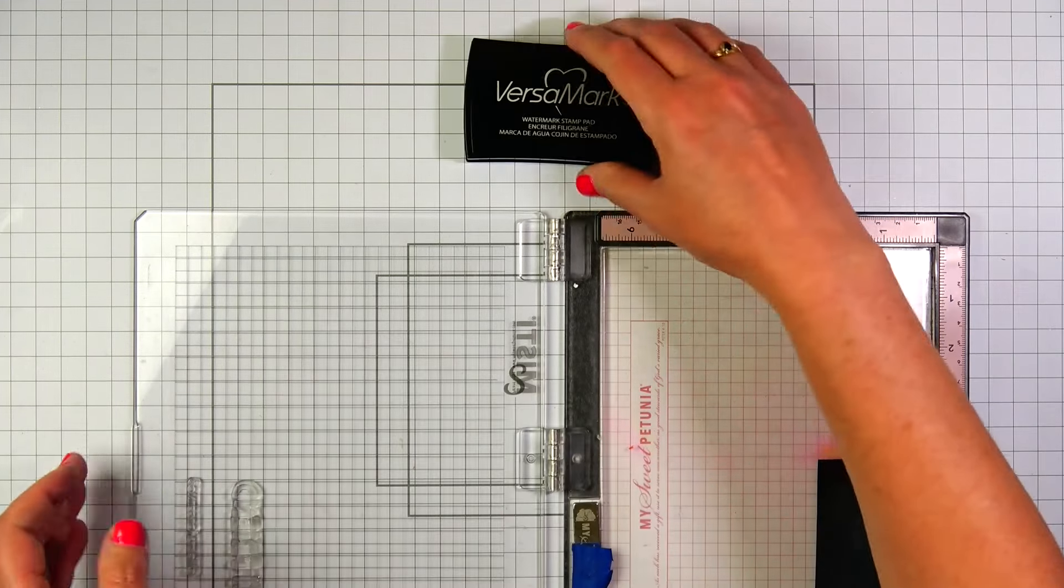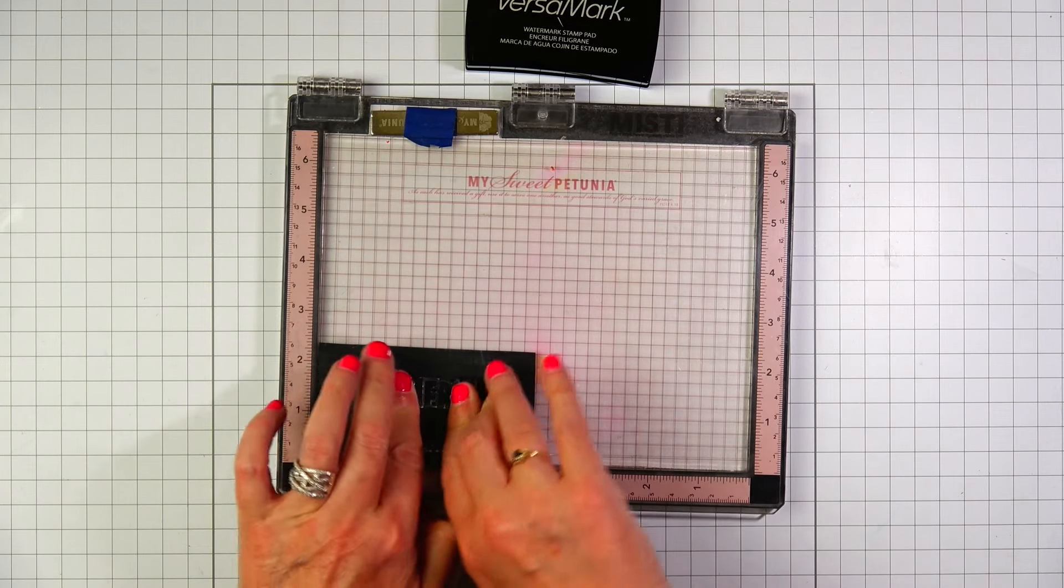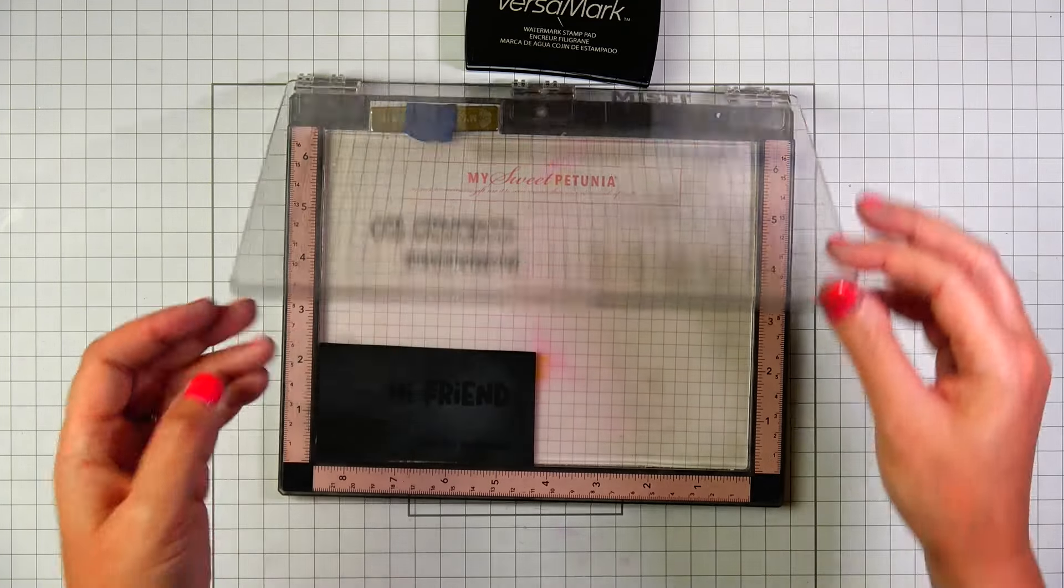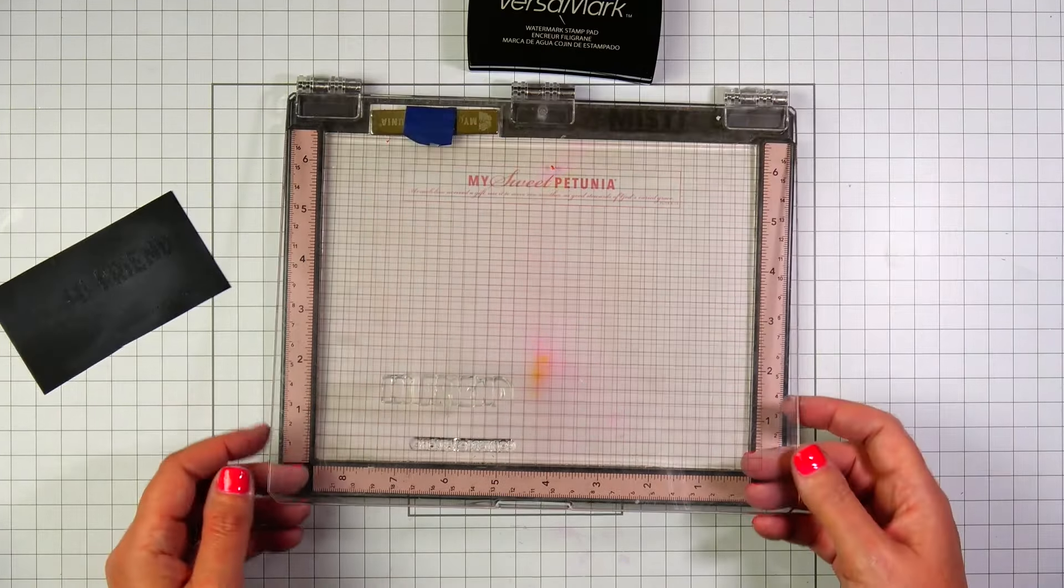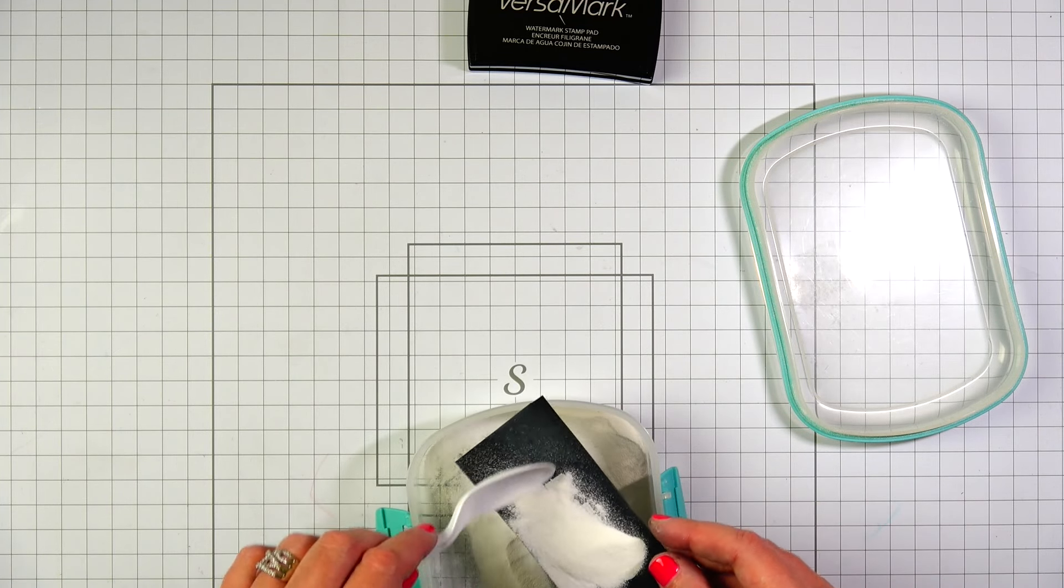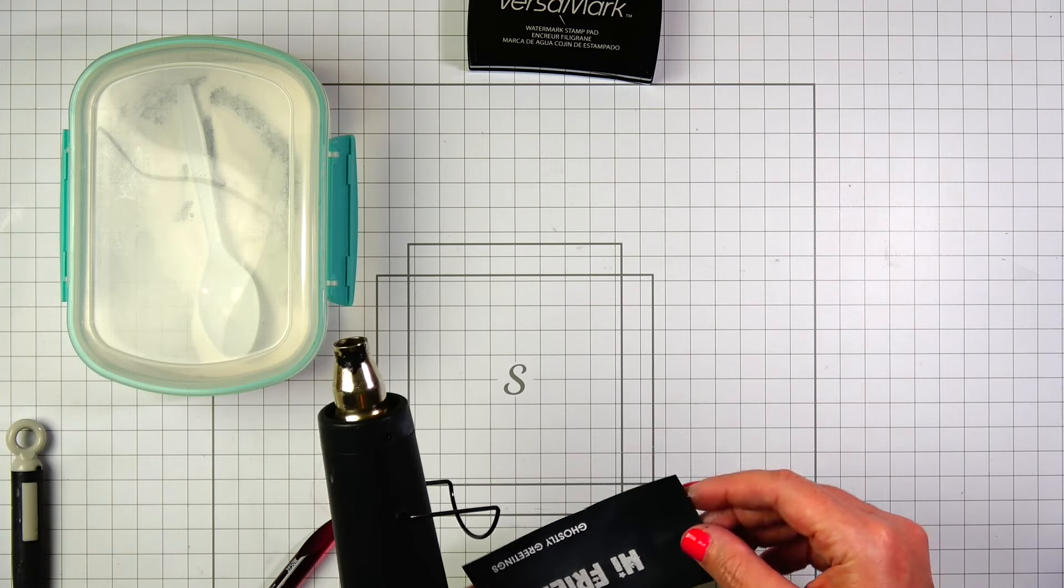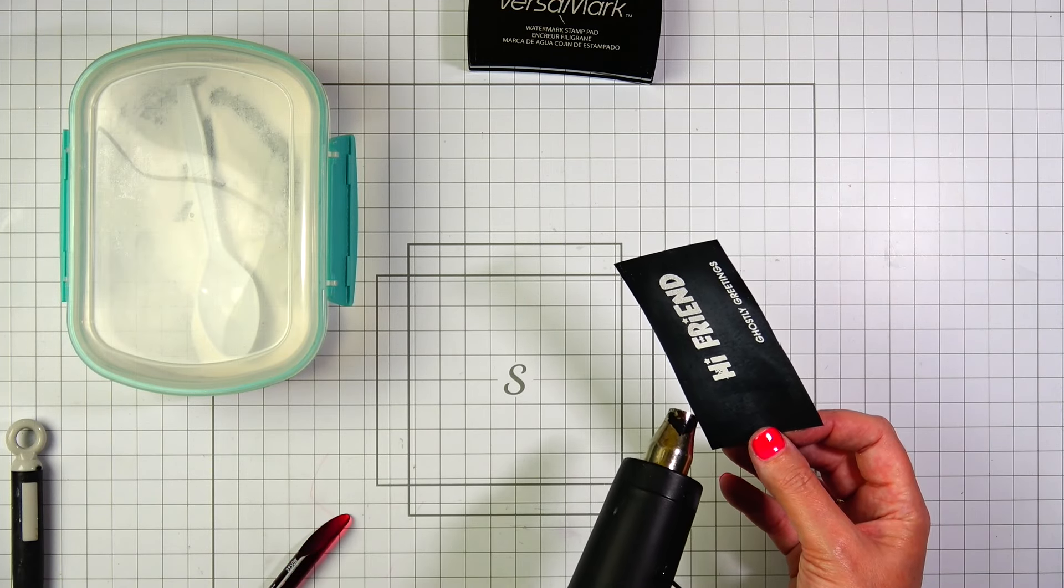I'm using Versamark embossing ink to stamp the sentiments onto black cardstock. And then I'm going to pour a bit of Brutus Monroe alabaster white embossing powder over the ink. And I'm going to use my heat gun or my heat tool to melt the embossing powder.